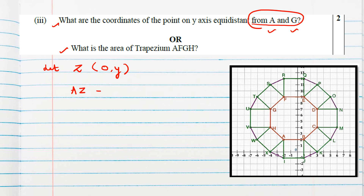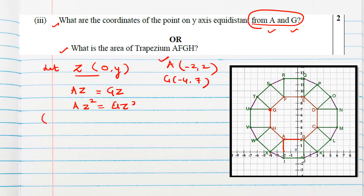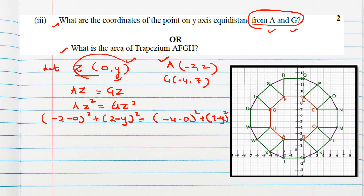Since AZ = GZ, we square both sides. A is (−2, 2) and G is (−4, 7). For AZ squared: (−2 − 0)² + (2 − y)² and for GZ squared: (−4 − 0)² + (7 − y)². Setting them equal and expanding using the identity (a − b)² = a² − 2ab + b²: we get 4 + 4 − 4y + y² = 16 + 49 − 14y + y².